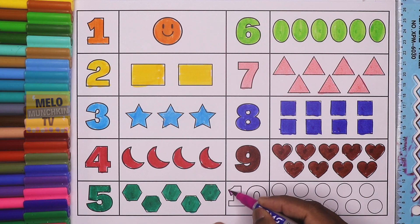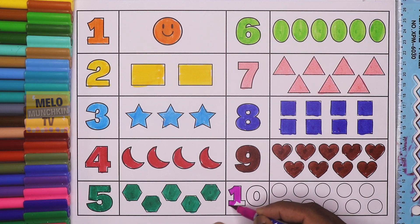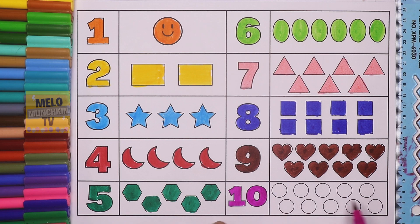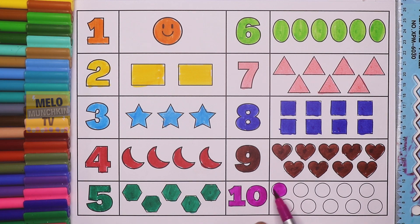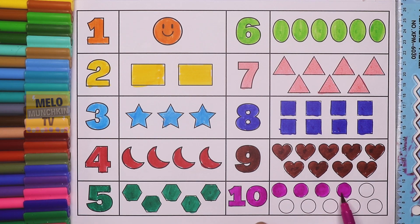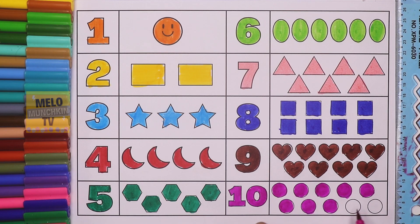And finally, I'll take pink color to color number ten — T E N, ten. And these are circles. How many circles? Let's count: one, two, three, four, five, six, seven, eight, nine, and ten. Ten circles.